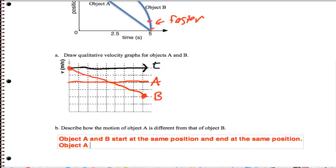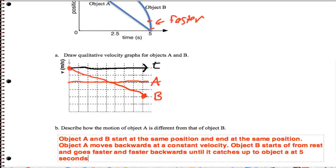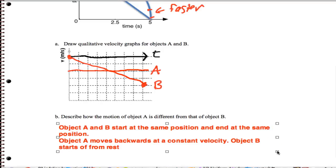Object A moves backwards at a constant velocity. Object B starts off from rest and goes faster and faster backwards until it catches up to object A at five seconds. And that's really how we do this description. You want to make it as complete as you possibly can.